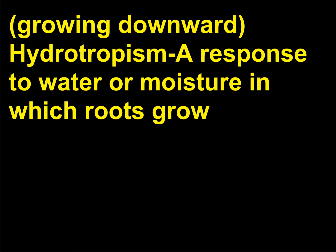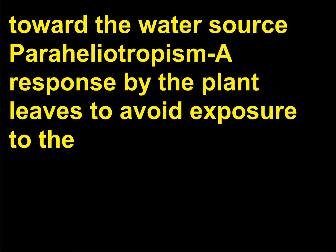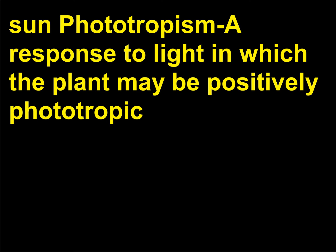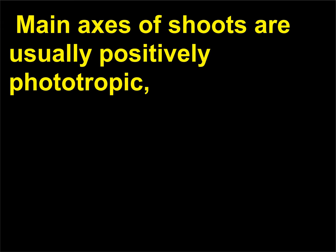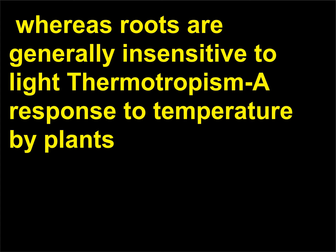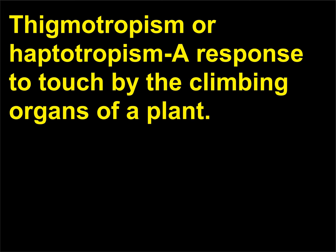Hydrotropism is a response to water or moisture in which roots grow toward the water source. Paraheliotropism is a response by the plant leaves to avoid exposure to the sun. Phototropism is a response to light in which the plant may be positively phototropic, moving toward the light source, or negatively phototropic, moving away from the light source. Main axes of shoots are usually positively phototropic, whereas roots are generally insensitive to light. Thermotropism is a response to temperature by plants. Thigmotropism or haptotropism is a response to touch by the climbing organs of a plant.